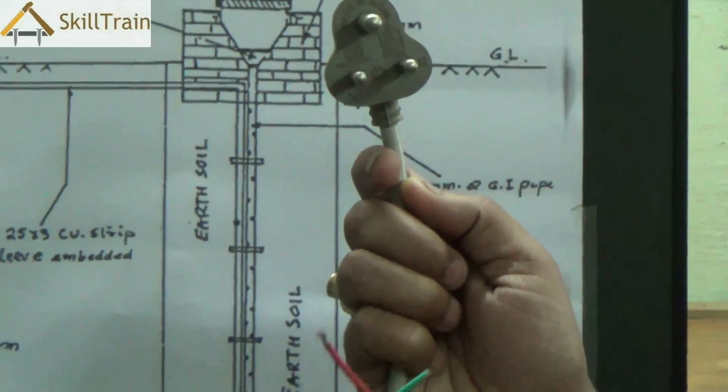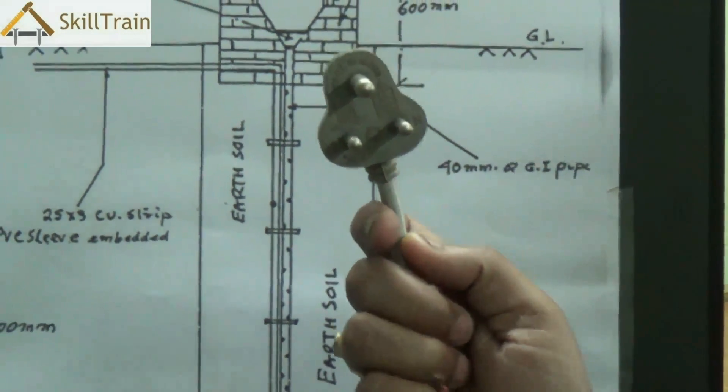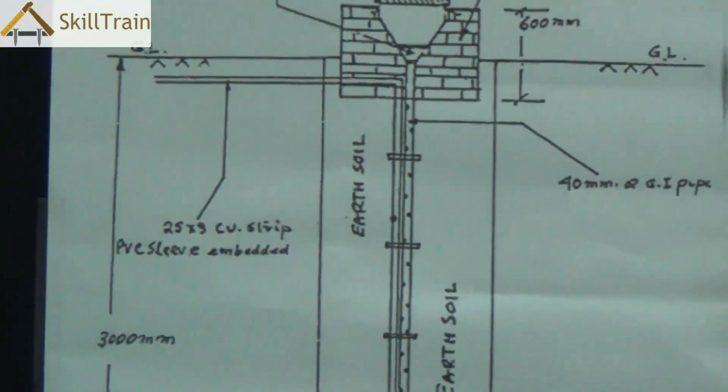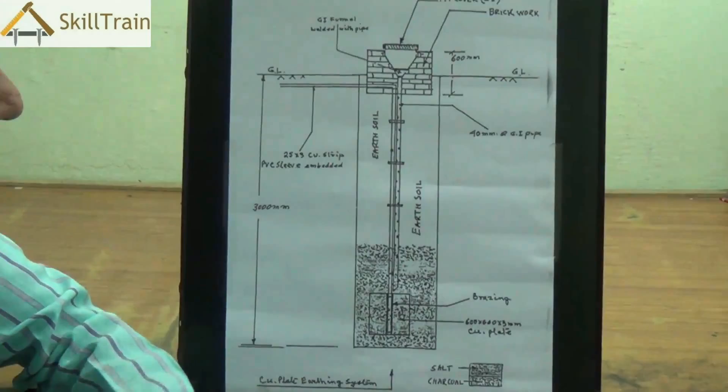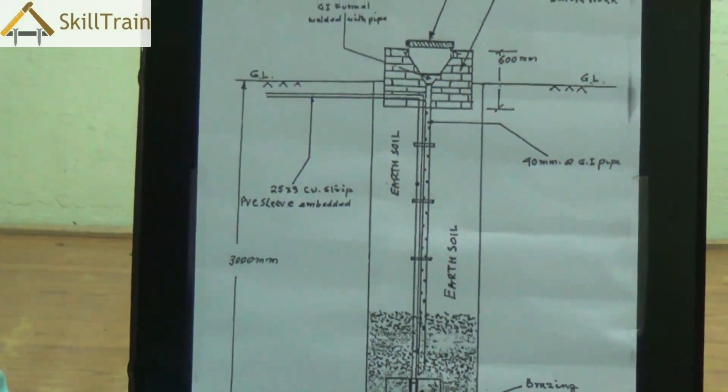Now there are different types of earthing. In this video we will try and understand plate earthing. Plate earthing is called plate earthing primarily because we use a copper plate or a GI plate at the bottom of the earthing.